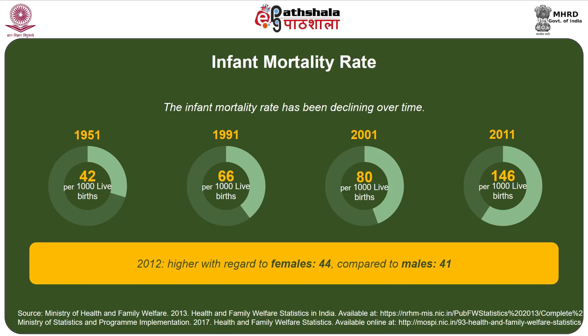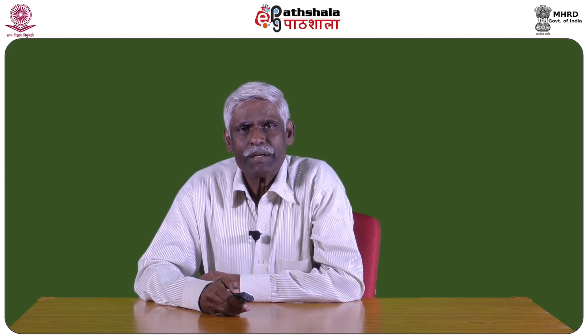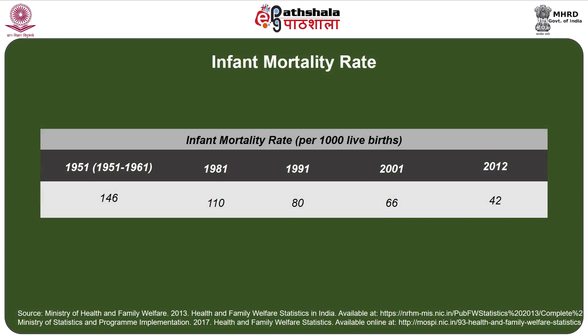Another alarming issue is gender differences in infant mortality. The infant mortality rate for females is 44, whereas in the case of males it is only 41, clearly indicating neglect of the female child. This is an area where we have to emphasize gender equality and ensure the girl child is adequately cared for. Over the period from 1951 to 2012, infant mortality came down from 146 to 110 in 1981, further to 80 in 1991, 66 in 2001, and the latest figure is 42 in 2012.